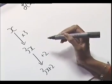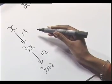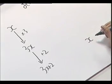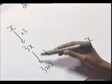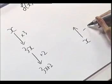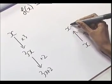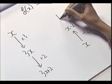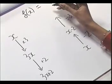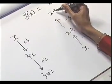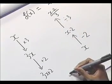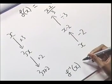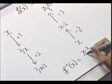Since we want f inverse to take f of x and give us back x, to work out f inverse we need to undo every operation that f did. So if we start off with x, first we undo the last operation that f did, so we take away 2, giving us x minus 2. Before that we'd multiplied by 3, so to undo that we divide by 3, giving us x minus 2 all divided by 3. So f inverse of x is x minus 2 all divided by 3.